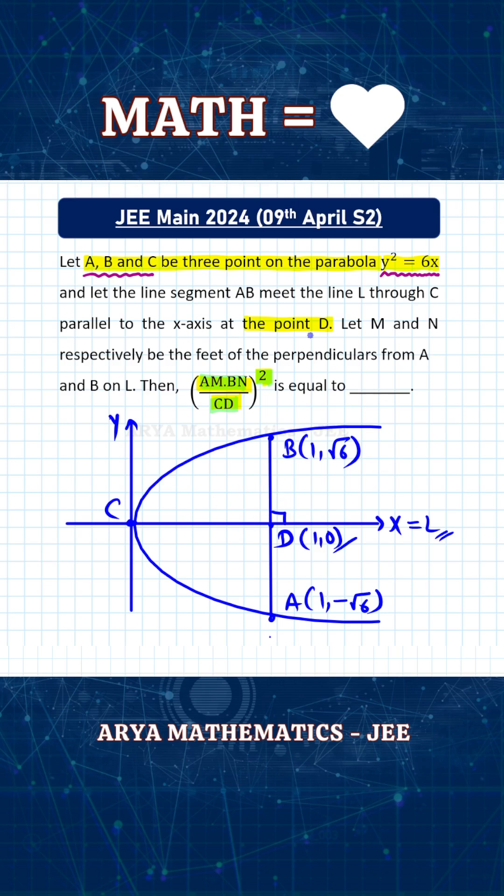Also, M and N are the feet of perpendiculars from A and B on line L. That will mean that point D is the same as point M and N, because M is the foot of the perpendicular from A on L. So points M, N, and D are all the same point: (1, 0).